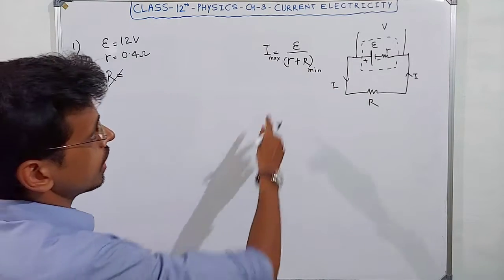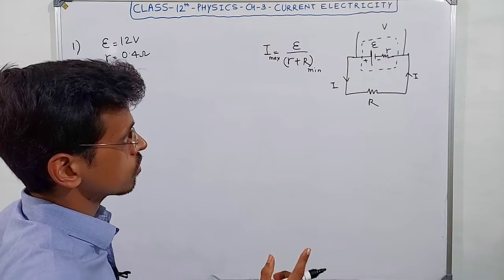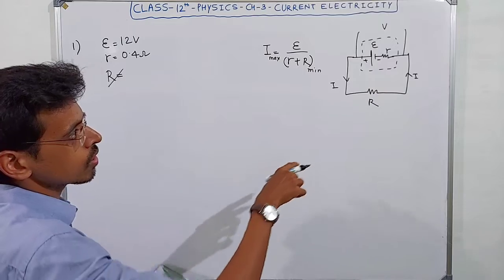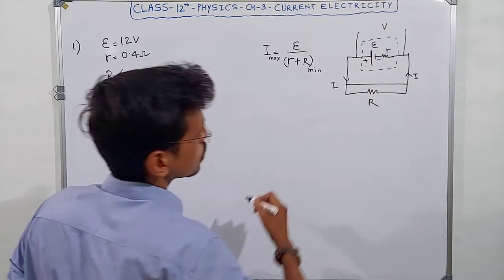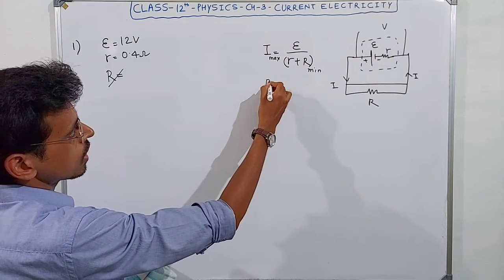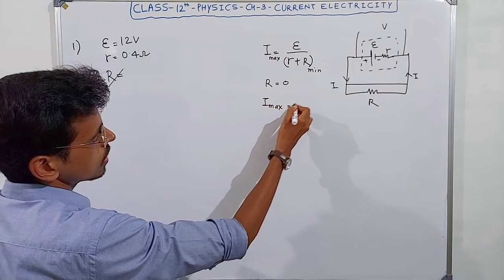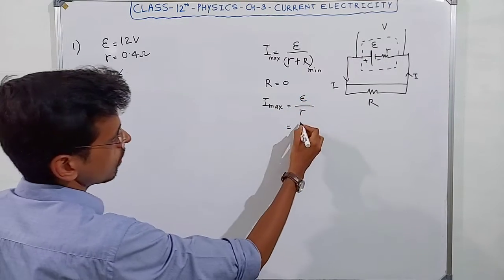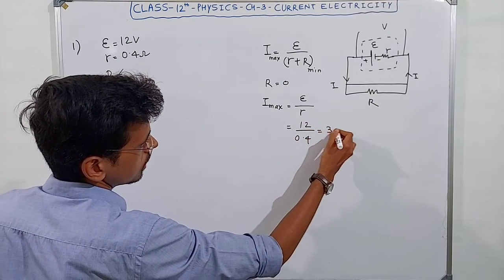We know that any battery has internal resistance, but the external resistance can approach approximately zero. If R equals to zero, then I max equals to epsilon, the EMF, divided by r. This equals 12 divided by 0.4, which equals 30 amperes.